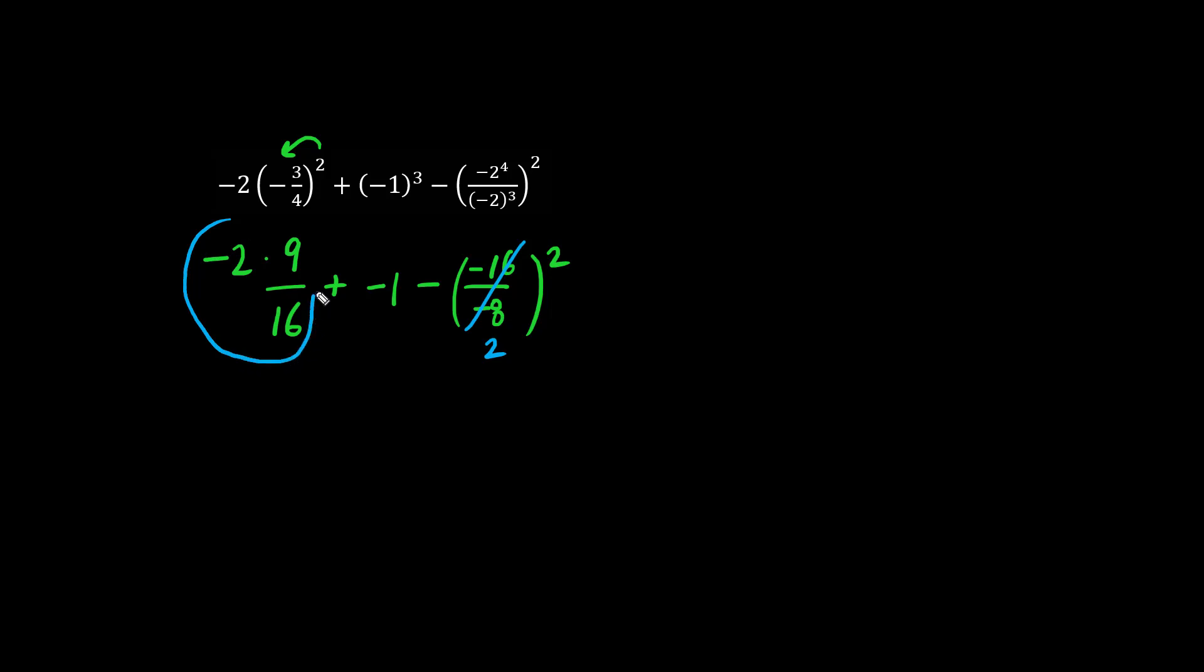Focusing on this part here, we have negative 2 times 9 is negative 18. Negative 18 divided by 16, we have negative 9 over 8. We have plus minus becomes minus, so we have minus 1. And we have minus 2 squared, or minus 4.